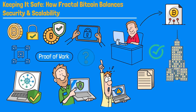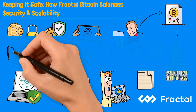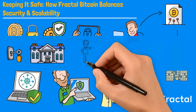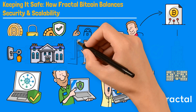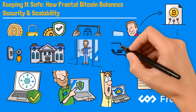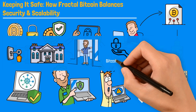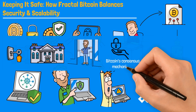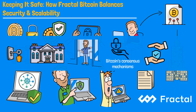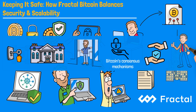So scaling up while keeping things secure? Fractal Bitcoin has it all figured out. Picture Fractal Bitcoin as a state-of-the-art security system for a fancy mansion. As new rooms or layers are added, the mansion doesn't lose its original security features. Instead, it integrates advanced surveillance — that's Bitcoin's consensus mechanisms — throughout, ensuring that every new area remains just as safe as the first, allowing everyone to enjoy their space without worry.